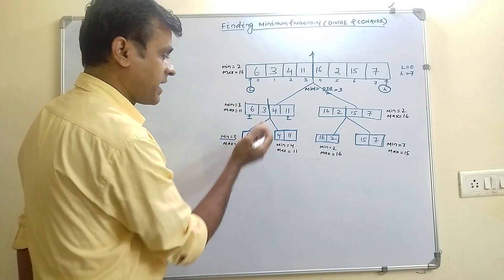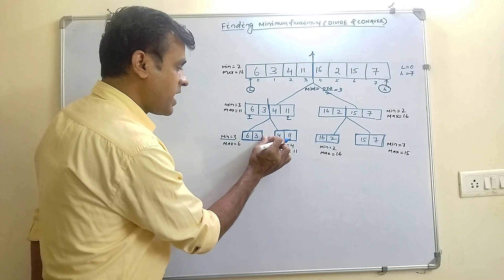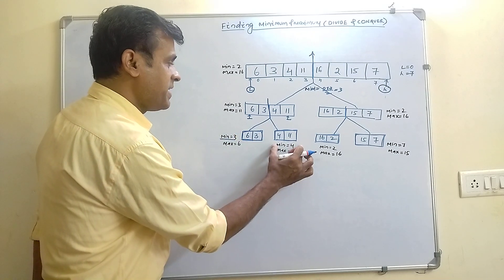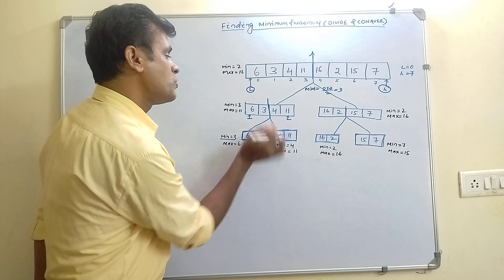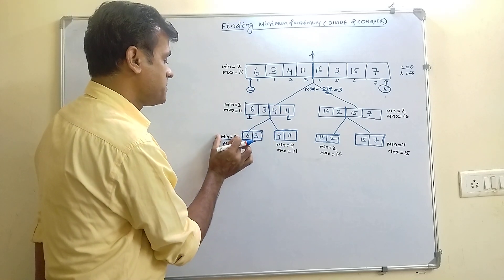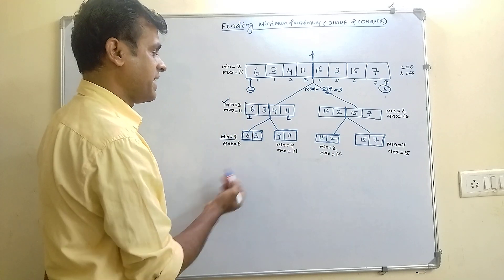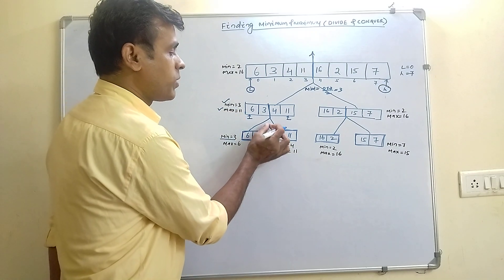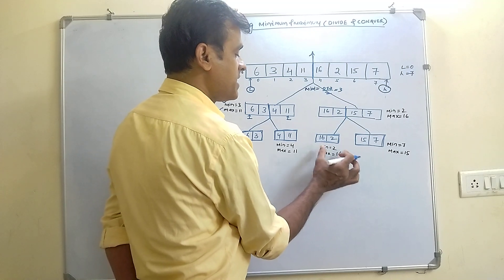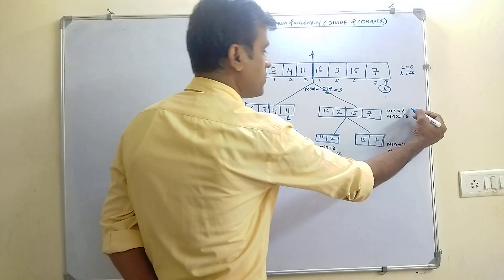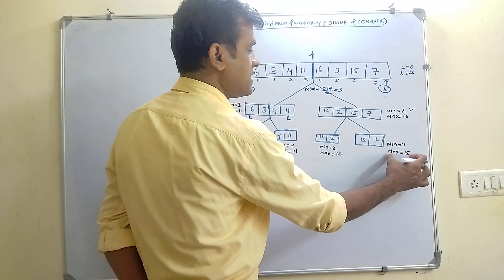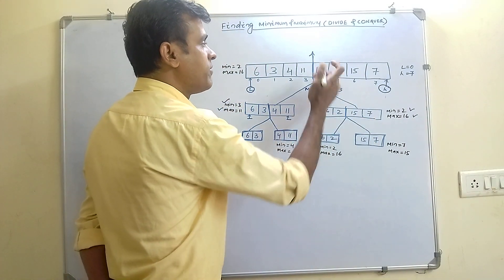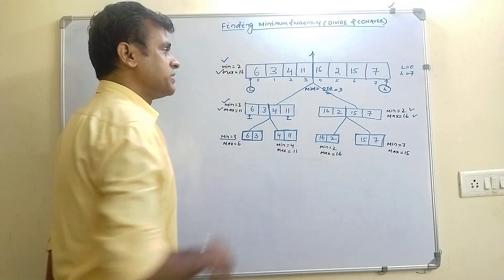Now I will come back and conquer. For these two arrays I compare the min of this and min of that: min is 3 and min is 4, so final min becomes 3 for the parent node, and max is 11. For the other side, min is 2 and min is 7, so final min is 2, and comparing max 16 and max 15, final max is 16. Solving these two also gives final min equal to 2 and max equal to 16.